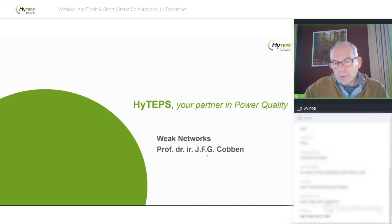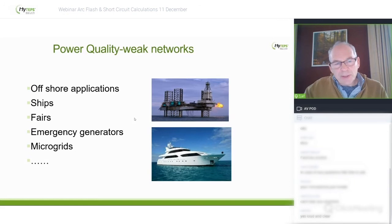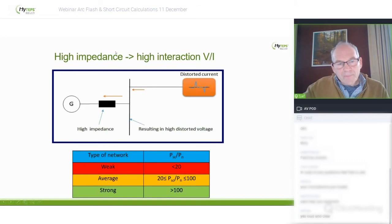My presentation is about weak networks, and I'm trying to explain why power quality at ships, or at weak networks in general, is a topic that should be studied and analyzed. Weak networks can be found in all installations not connected to the public network: offshore applications, ships, ferries, emergency generators, micro grids. Looking to the future, networks with storage solar systems and wind parks could also be disconnected from the public network and operate as a micro grid. All of these have the problem that the impedance of the network is quite high.